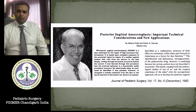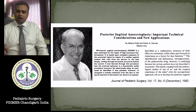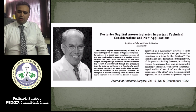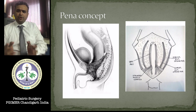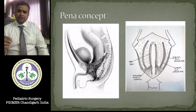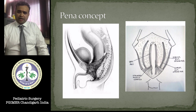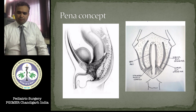Peña also said that the puborectalis sling has less importance in anal continence. His concept described a funnel-shaped muscle around the rectum — the levator ani — and parasagittal fibers running on both sides of the mid-sagittal plane. When dissection is done completely in the midline, the rectum can be well exposed, the fistula opened and ligated, and the rectum placed exactly in the midline between the muscles.